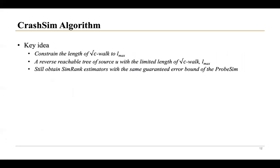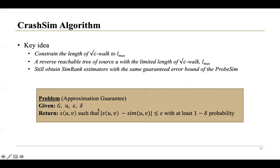To overcome these drawbacks, we use the following key idea. We first constrain the length of the square root C-walk to L_max, where L_max is set as a function of C for guaranteeing an error bound. With the help of the limited length, we can compute a reverse reachable tree for the source U, and then iteratively generate a square root C-walk for each node V to identify whether it can hit this limited path from U with a non-negligible probability. This process will significantly reduce redundant computation. Although the walk length is constrained, we are still able to obtain SimRank estimators with the guaranteed error bound of the PropSim algorithm. Then we formally define the error bound, shown here.